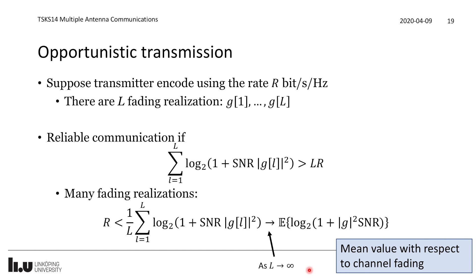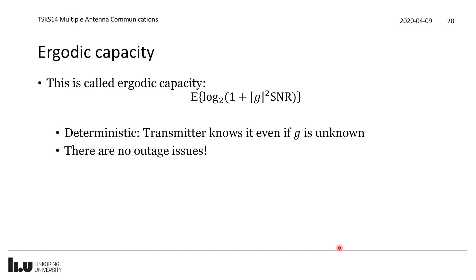This leads to the ergodic capacity: C_ergodic = E[log₂(1 + |G|² · SNR)], where the expectation is taken over the channel fading realizations. This is a deterministic number that the transmitter knows, even without knowing the channel realization. The transmitter can therefore select R ≤ C_ergodic, and the outage problem does not arise in fast fading channels.